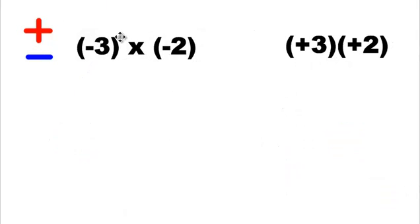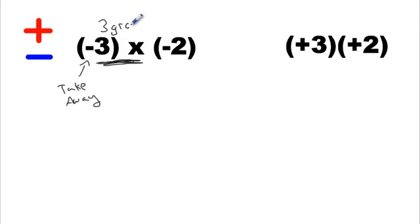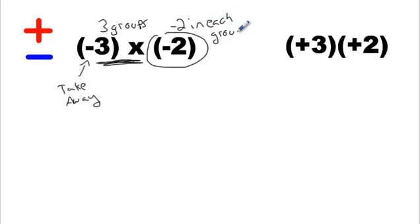Let's kick it up a notch. This does not say 'add' anymore — it says 'take away.' Now think about what take away means. We have to take away, underline this one — this says three groups. And this one says we need negative two in each group. So there's a problem here. In the last question it asked us to add pieces, to add groups. Now it's saying take away groups. Do you see what the problem is? There's no groups to take away — there's nothing here that we can grab and take away.